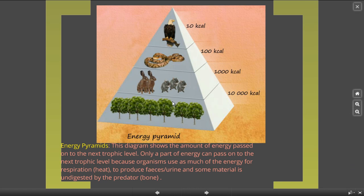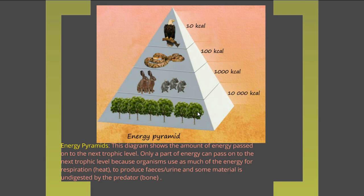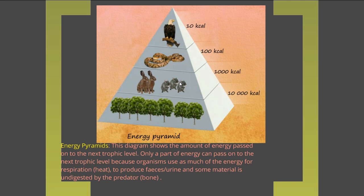A trophic level refers to essentially a type of organism. There are four trophic levels: at the bottom you have your autotrophs, the organisms that photosynthesize to produce their food. Higher up you have your primary consumers, which feed upon the autotrophs or producers. Then you have your secondary consumers, which feed upon the primary, and then your tertiary consumers — such as the eagle that feeds upon the snake.